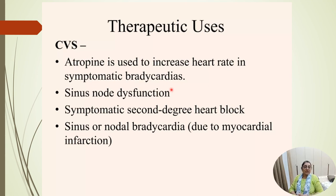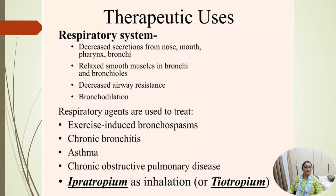For cardiovascular use, atropine is used to increase heart rate in symptomatic bradycardia, sinus node dysfunction, symptomatic second-degree heart block, and sinus or nodal bradycardia — all conditions where atropine can be given to raise the heart rate.